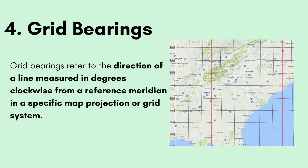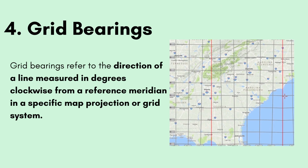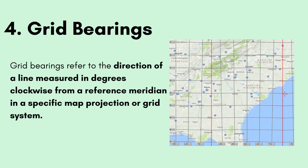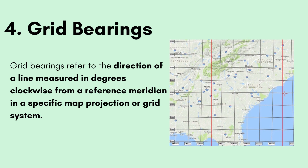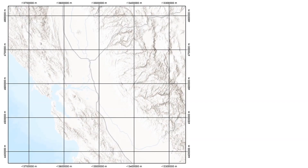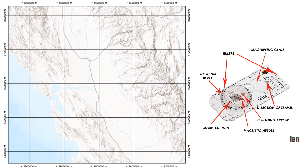Number four are grid bearings. Grid bearings refers to the direction of a line measured in degrees clockwise from a reference meridian in a specific map projection or grid system. They are commonly used in surveying when working with coordinate systems and mapping. A map system consists of grid lines also called the grid meridian, and when an angle is determined with respect to this grid meridian, what we get are grid bearings. The value of grid bearing can be determined by means of a map and a compass dial, or by means of calculation.